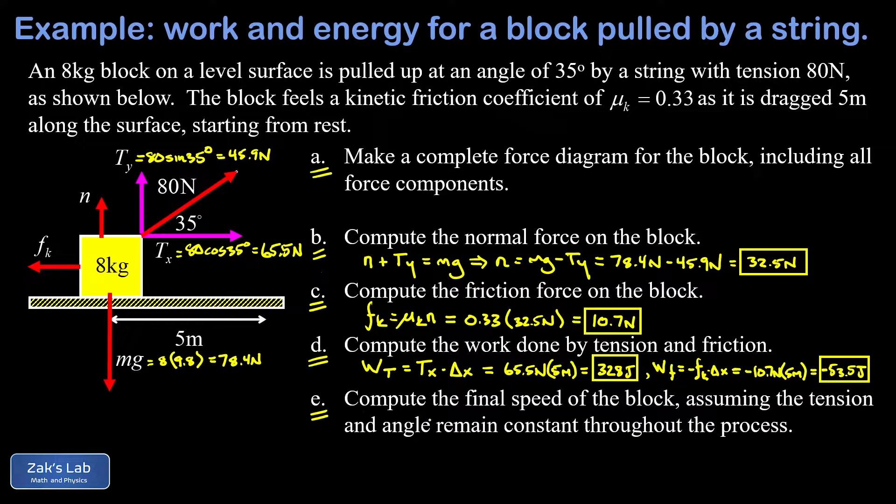In part e we want to use the work energy theorem to find the final speed of the block. There's one point about the setup for the problem that I want to highlight here. We were told it started from rest, which means the initial kinetic energy is zero, so we don't have to worry about that. We know the network gives us the change in kinetic energy, and the change delta always means final minus initial. So that's K final minus K initial, and K initial happens to be zero.